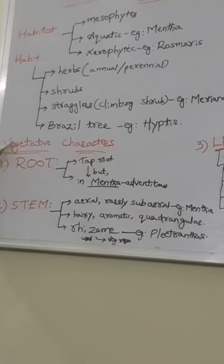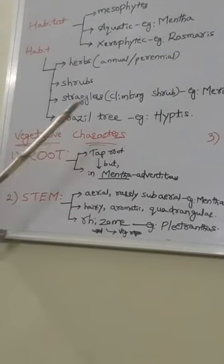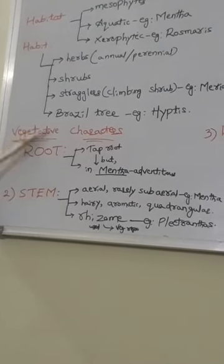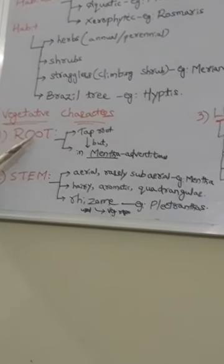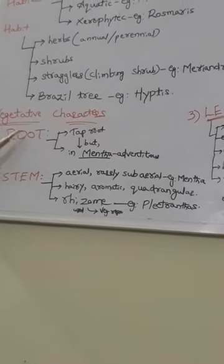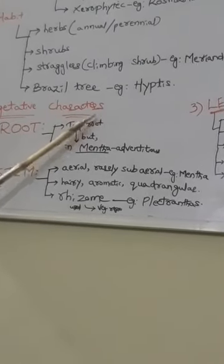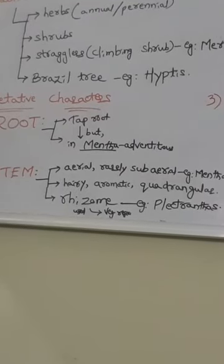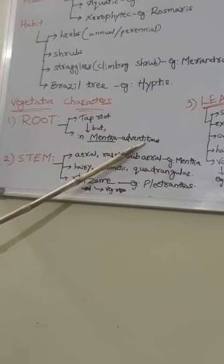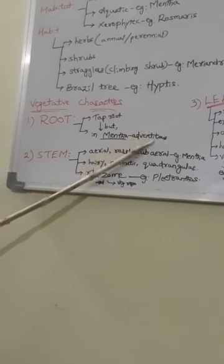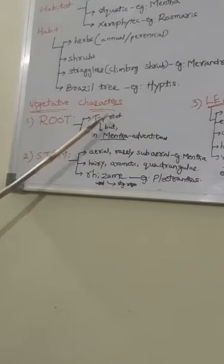Next, we will discuss the vegetative characters of the Lamiaceae family. The root system present in this family is the tap root system, because all plants in this family are dicotyledons. However, in Mentha, adventitious roots are observed because it is grown as an aquatic plant.